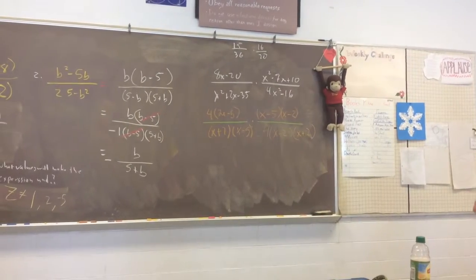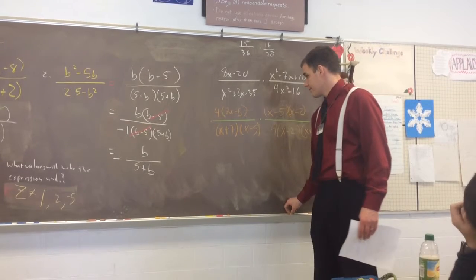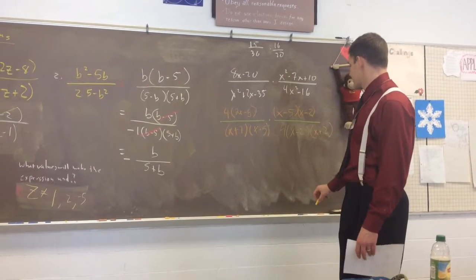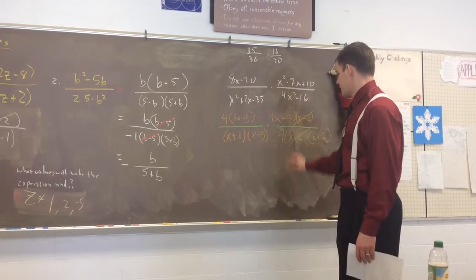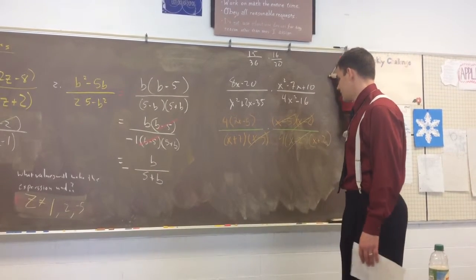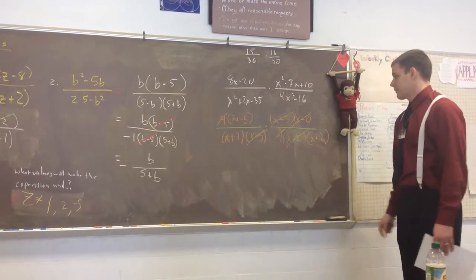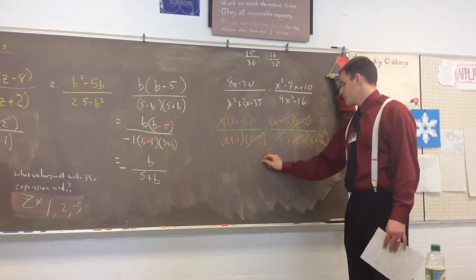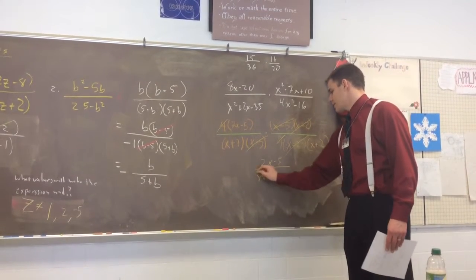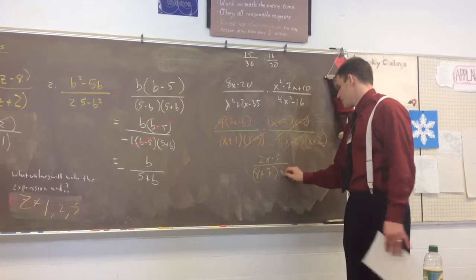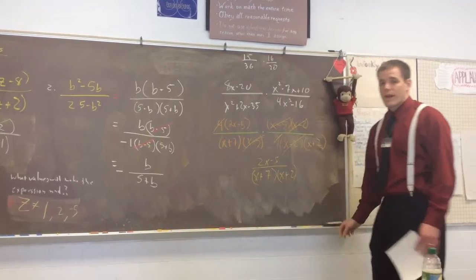All right, so now that it's all factored, now we cancel. X minus twos, X minus fives, fours. So we're left with 2x minus 5 all over x plus 7 times x plus 2. And we're happy.